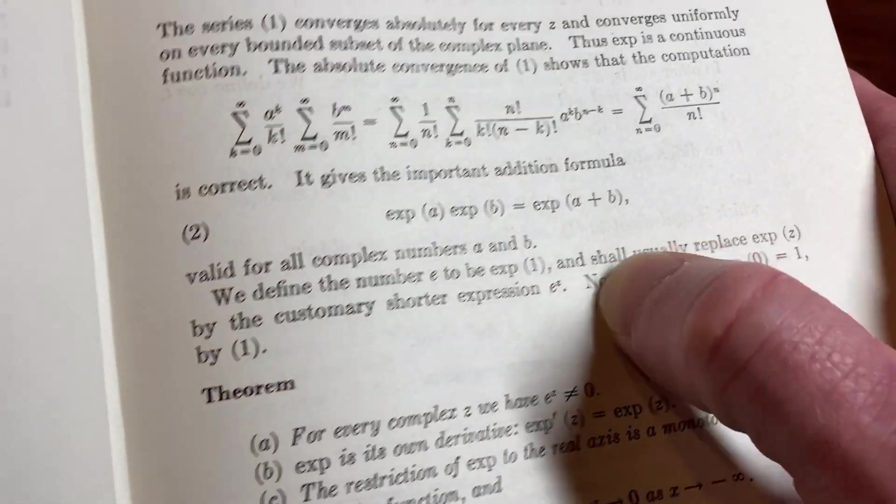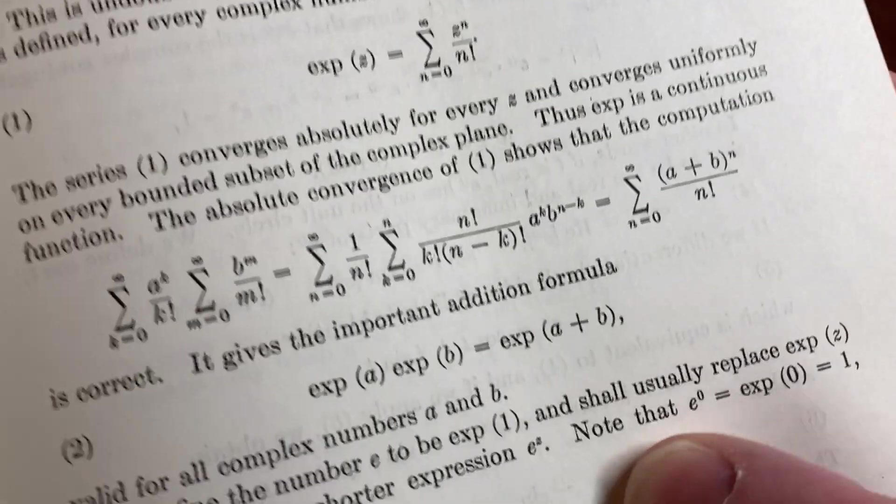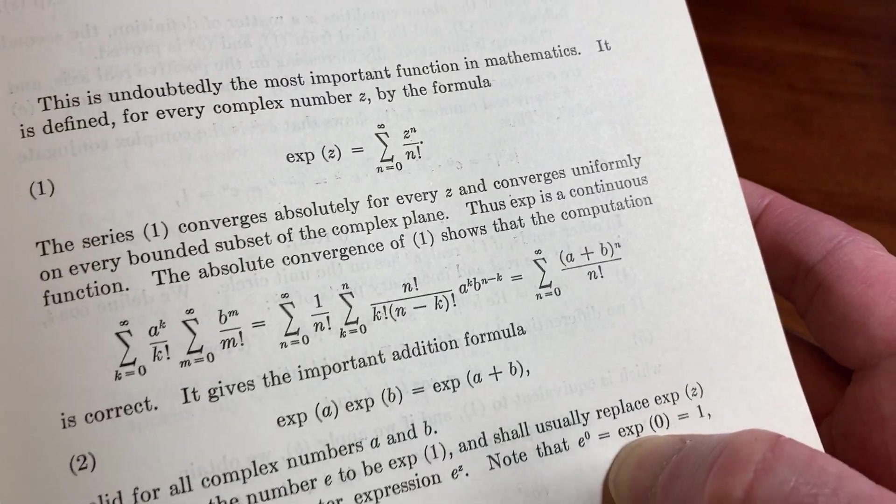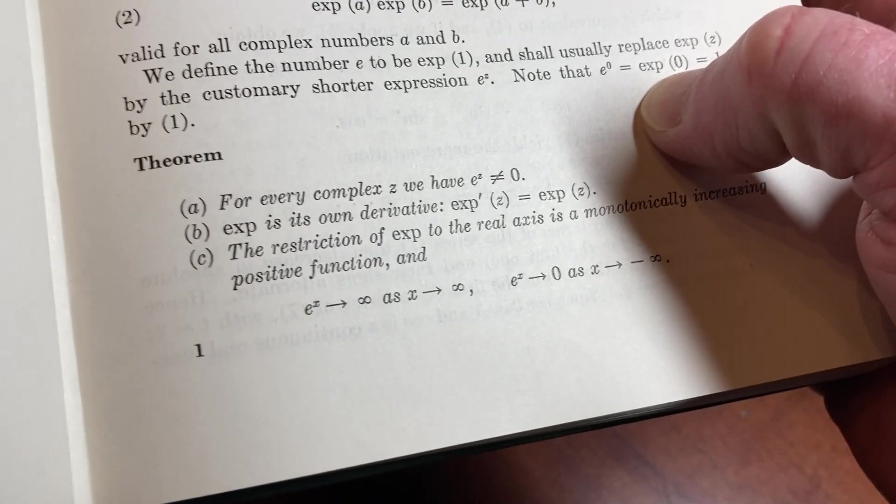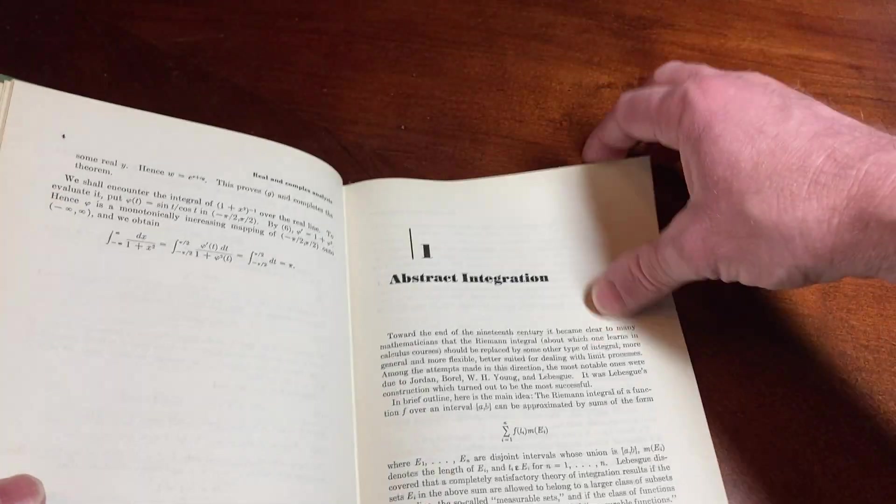It gives the important formula valid for all complex numbers a and b. We define the number e to be exp(1) and usually replace exp(z) with the customary shorter expression e to the z. Note that e to the zero is one. This is so cool. Then it has a theorem here.